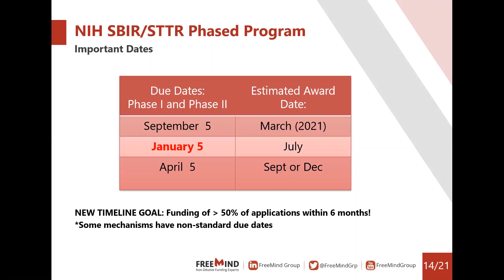In terms of standard due dates, applications are due every four months: January 5th, April 5th, and September 5th. It usually takes around four months to get an initial review, and another four months — a total of eight months from submission — until you see the money. However, the NCI's SBIR Development Center is working hard to reduce the time from application to award to six months, and we are already seeing more than 50% of applications funded within that timeframe.